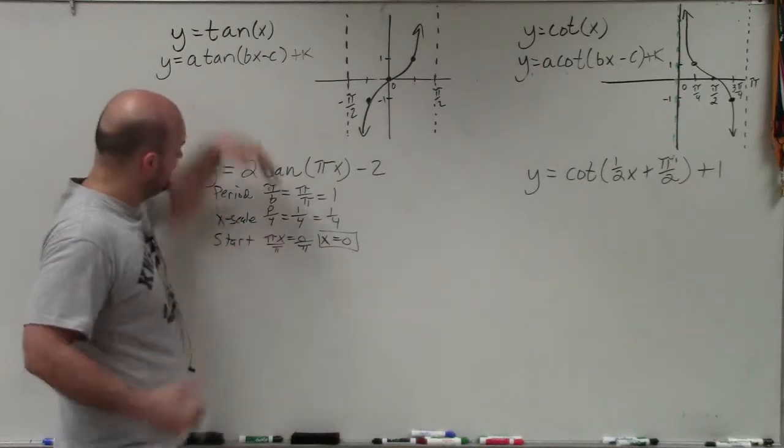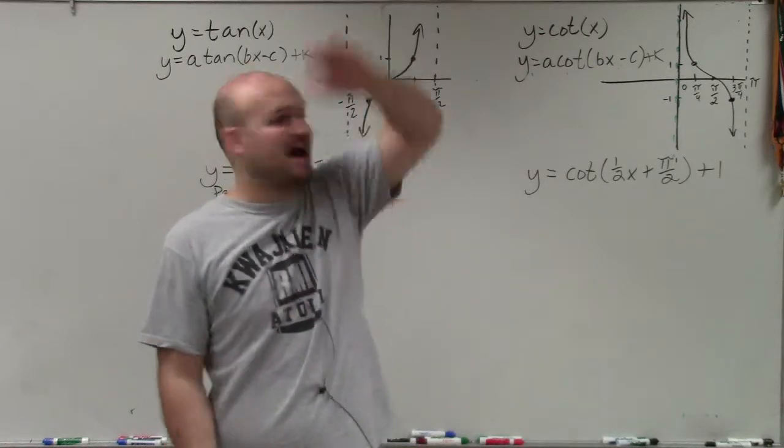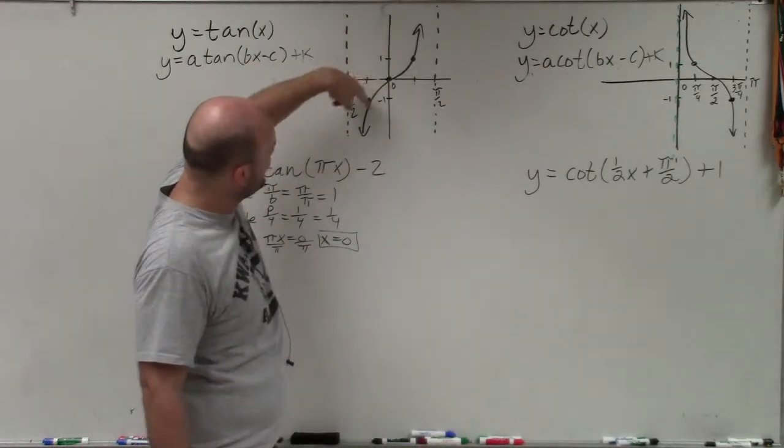The only other thing I want you to understand here is now 2, what that's going to do is since that is larger than 1, that is going to vertically stretch our graph. Rather than the points being on the graph at negative 1 and 1, they're now going to be going up to 2 and down to negative 2.